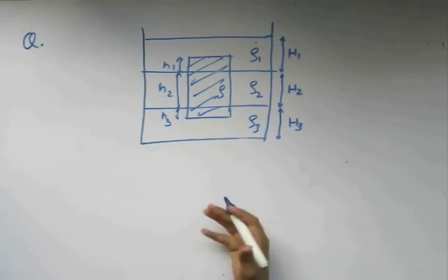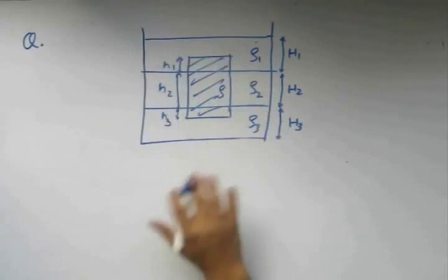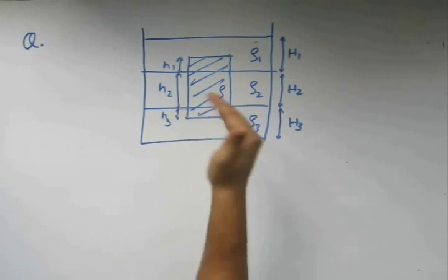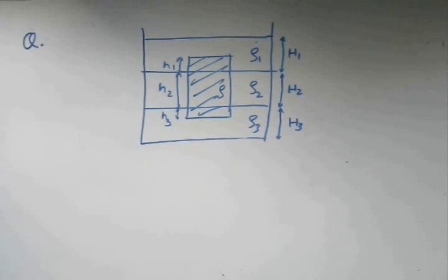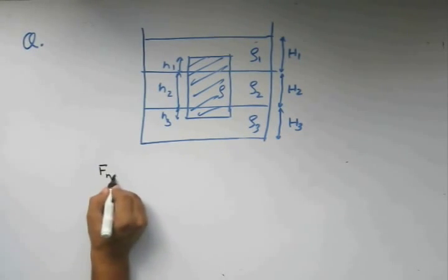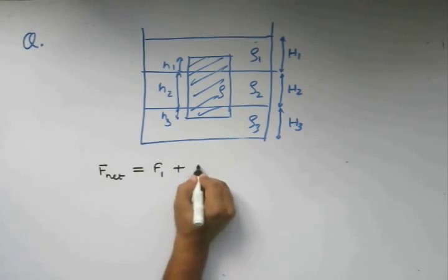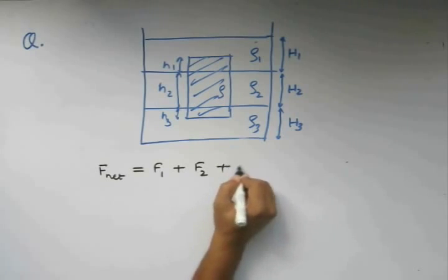Let us say our goal is to find out the net force due to the three liquids on this body. So the F net is basically going to be the force due to 1, the force due to 2, and the force due to 3.